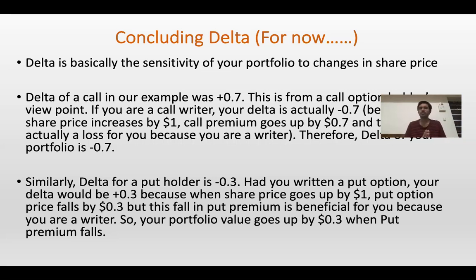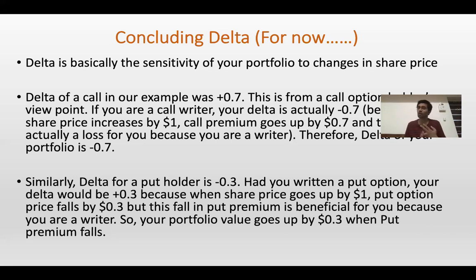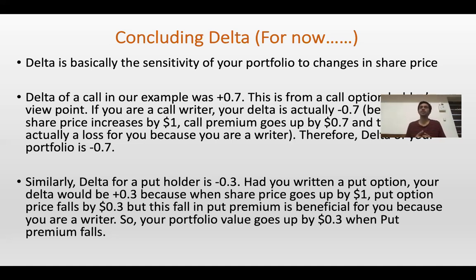Now I'm refining that definition of Delta. Delta is not just the sensitivity of option premium — it is the sensitivity of your portfolio to changes in share price. Your portfolio could consist of not only one call option, but also a put option; you could be a writer, you could be holding certain shares. So Delta in that case is the sensitivity of your portfolio to change in share price. When share price changes by $1, how much does your portfolio value change by?